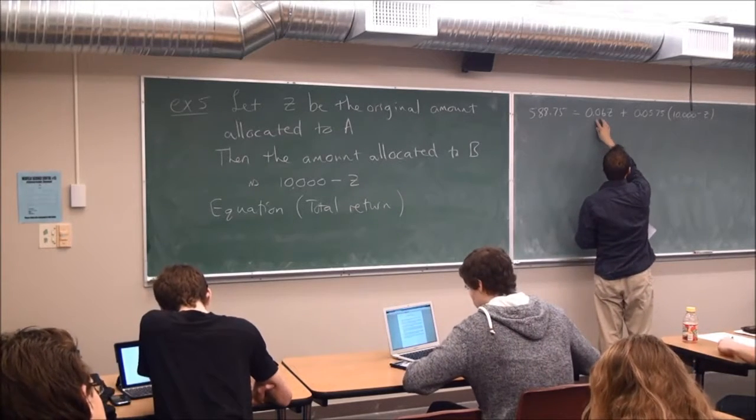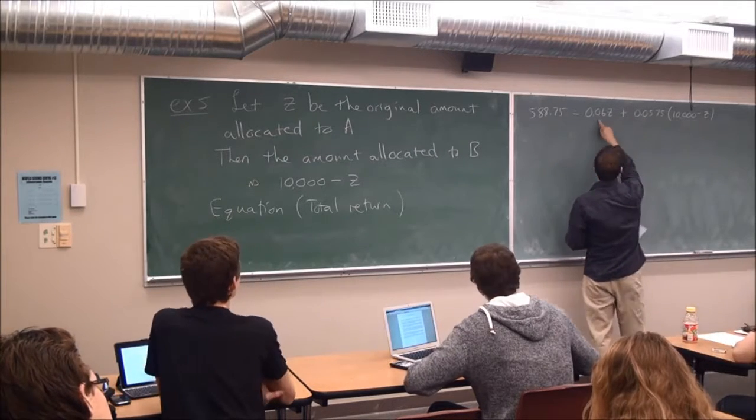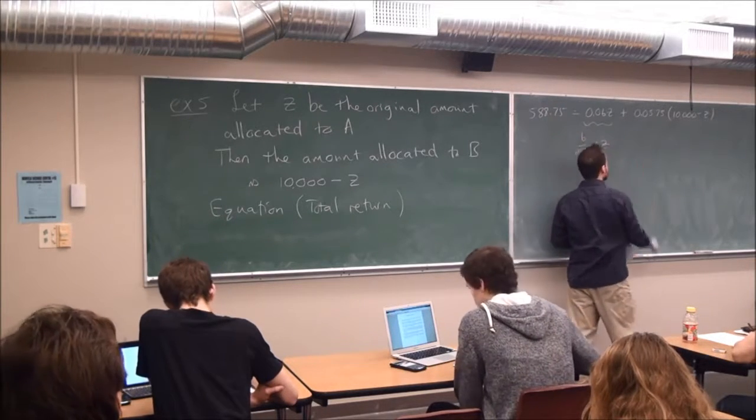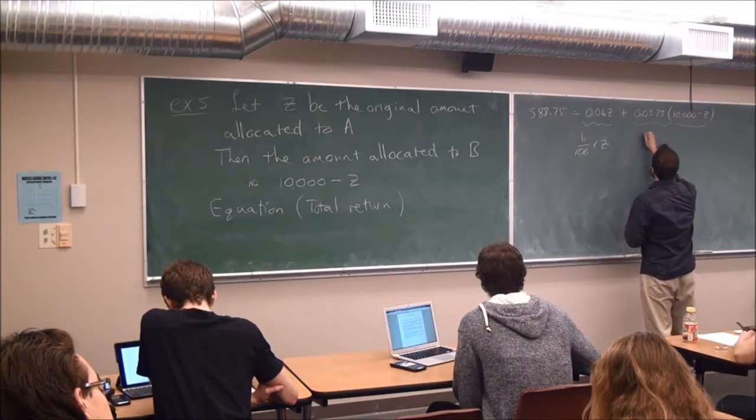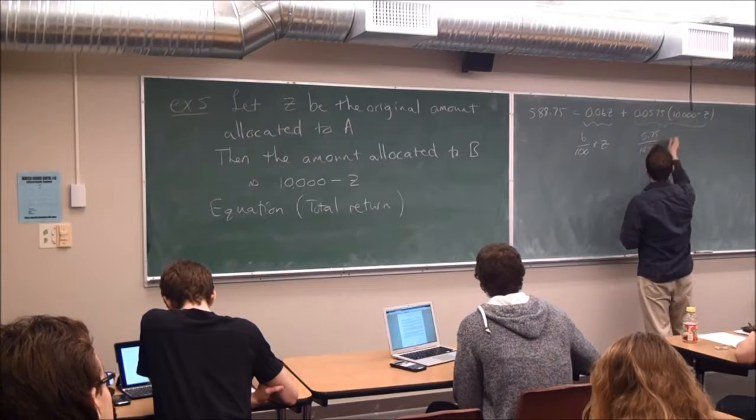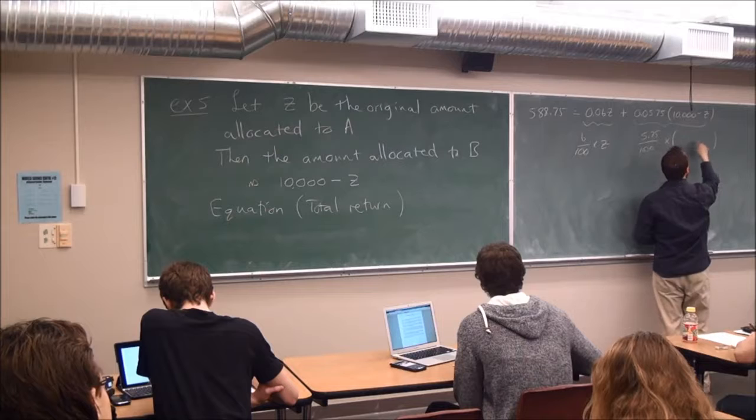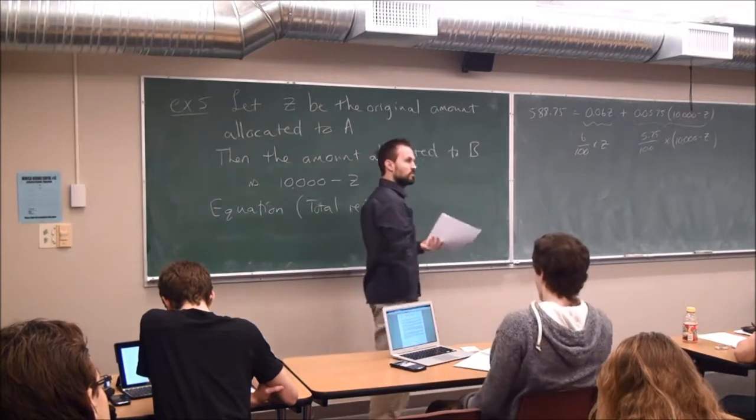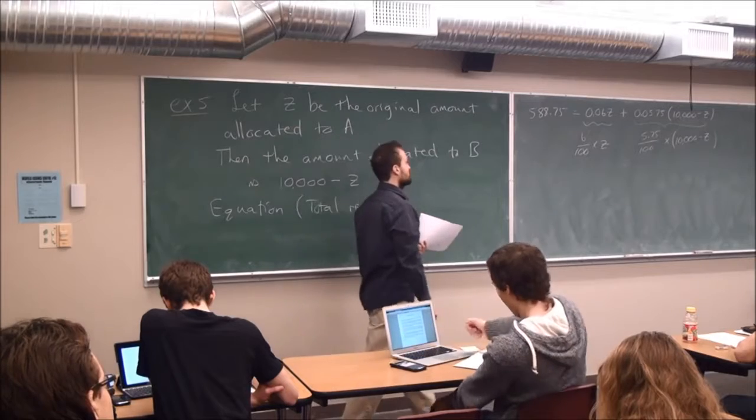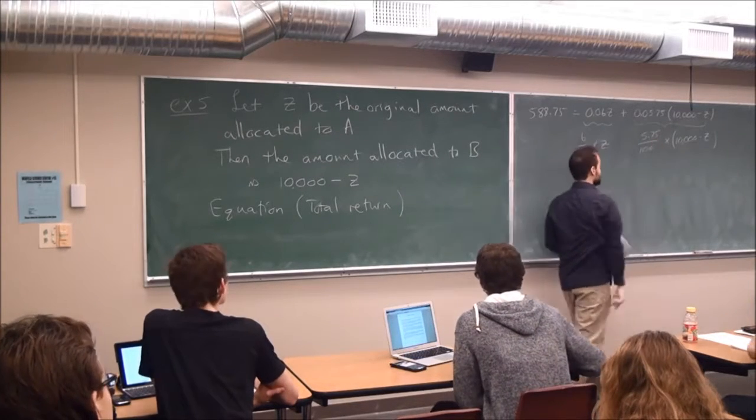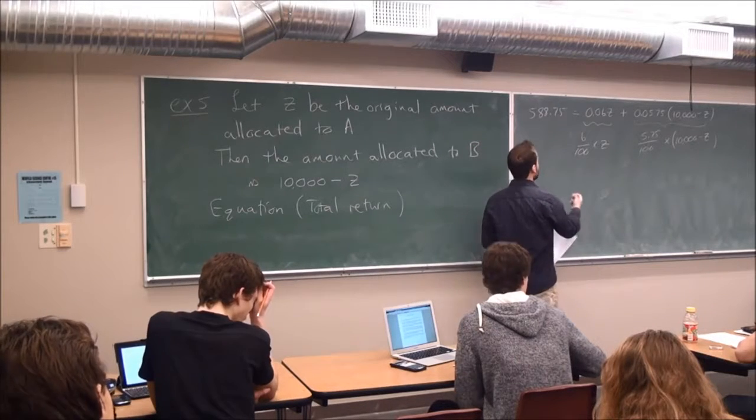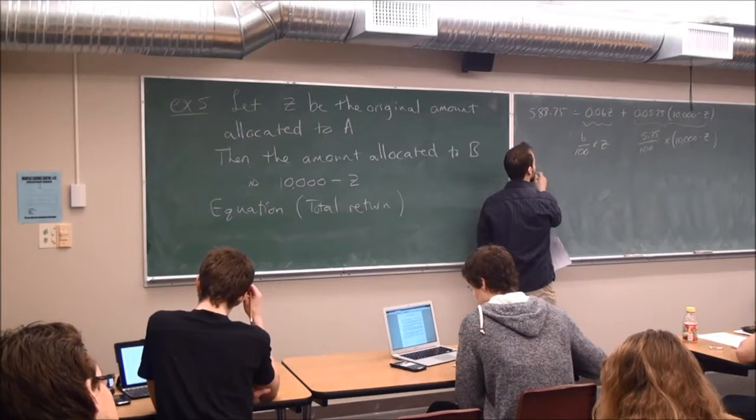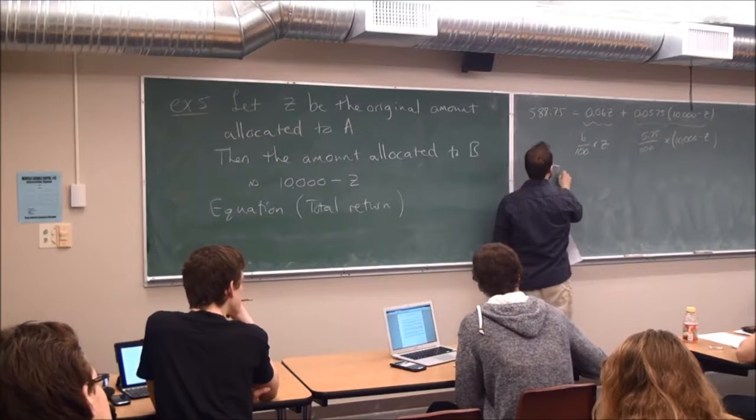588.75 equals 0.06Z plus 0.0575 times 10,000 minus Z. See how good that feels? Did you get it? Now you're more confident that you know what's happening. So this is the total that they tell me I got. That's made up of the return from A and the return from B. This is 6%, the same as 6 over 100 times Z. And this is 5.75% of my amount allocated to B, which is this. So it doesn't really matter if you feel strongly about fractions, if you feel strongly about decimals. Doesn't matter. However you want to think of percentages, it's fine for now.